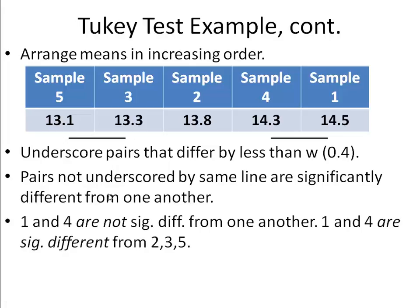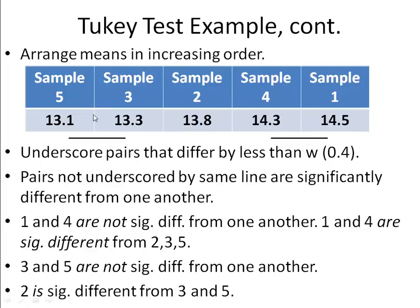And so, what does that mean? That means that sample 1 and sample 4 are not statistically significant from one another, but they are statistically significant from 2, 3, and 5, because they're not underscored by the same line. Similarly, samples 3 and 5 are not statistically significant from one another, but sample 2 is significantly different from 3 and 5, because it's not underscored by the same line.